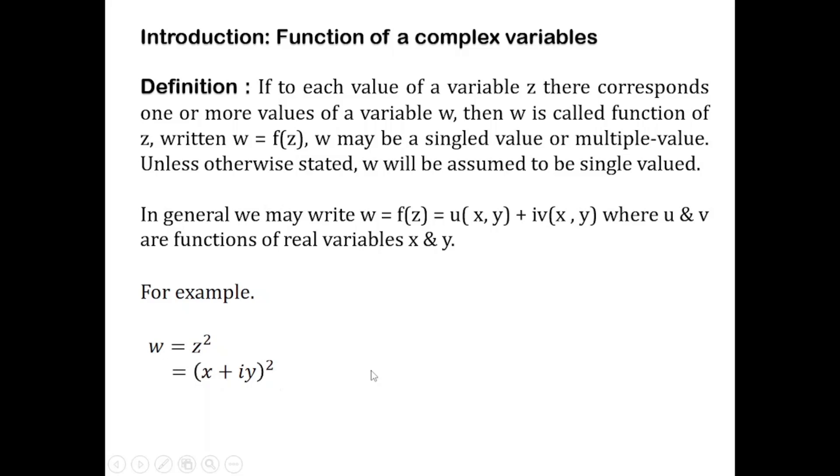Simplifying this, we have w = x² + i²y² + 2ixy. Since i² = -1, we have real terms x² - y² and imaginary term 2xy. In this way, you can clearly see that w is written in the form of u + iv, where u = x² - y² and v = 2xy. That is, u and v are functions of x and y.